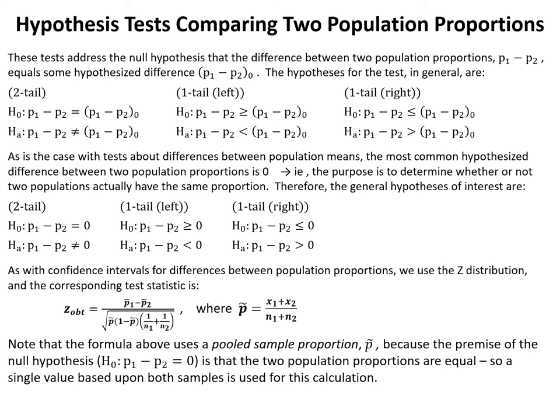We now look at hypothesis tests comparing two population proportions. These tests address the null hypothesis that the difference between two population proportions, P1 minus P2, equals some hypothesized difference. The hypotheses are similar to those for independent sample means, except we use P1 minus P2 instead of mu1 minus mu2. As with tests about population means, the most common hypothesized difference is zero — the purpose being to determine whether two populations actually have the same proportion.